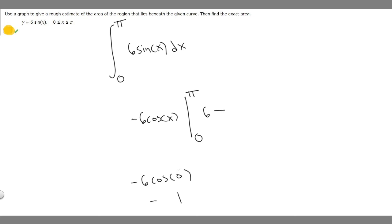And then we're multiplying it by minus 6. So minus 6 times 1 is equal to minus 6. So we have 6 minus negative 6. And so when you go ahead and do that, this is basically adding.